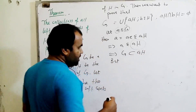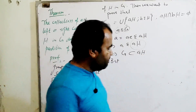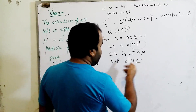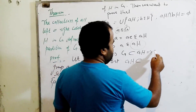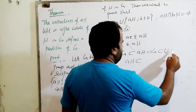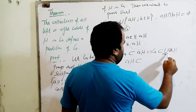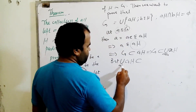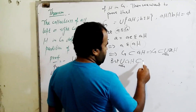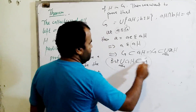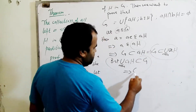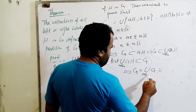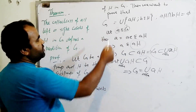Since G is the group and H is the subgroup, AH is contained in G. But if G is contained in the union of AH, and the union of AH is contained in G, then this implies that G equals the union of all AH where A is an element of G. So the first result is proved.